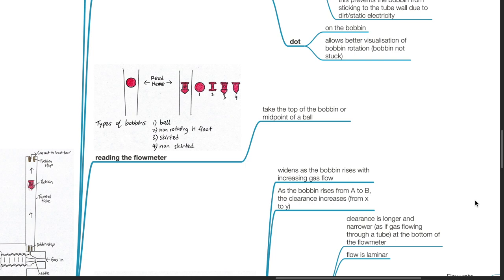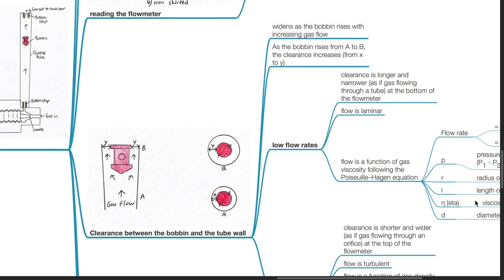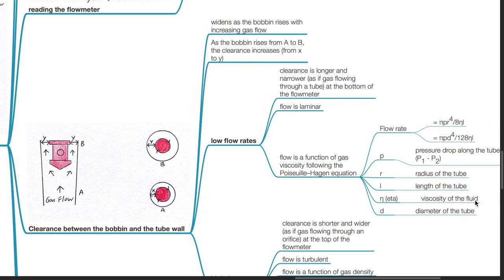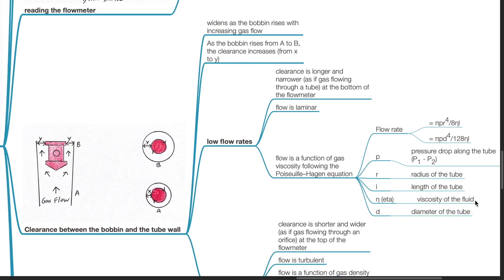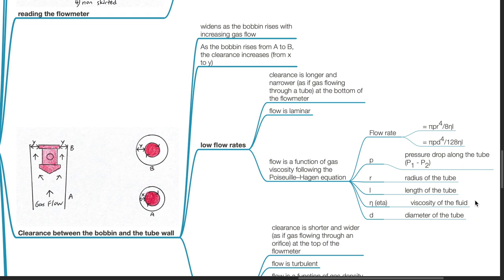Reading the flow meter: Take the top of the bobbin or midpoint of a ball. Clearance between the bobbin and the tube wall widens as the bobbin rises with increasing gas flow. As the bobbin rises from A to B, the clearance increases from X to Y.